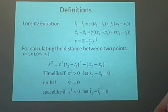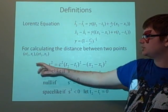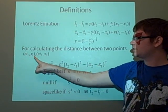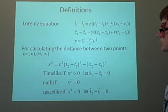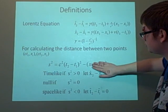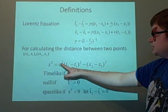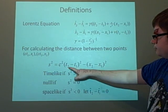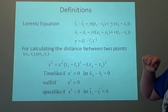To calculate the distance between two points given in the form (ct, x) - so we have (ct₁, x₁) and (ct₂, x₂) - we use the squared interval s², which equals c²(t₂ - t₁)² minus (x₂ - x₁)², where c is the speed of light.